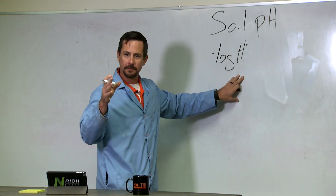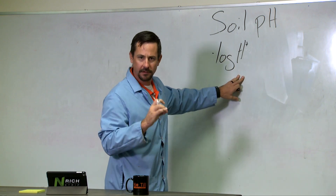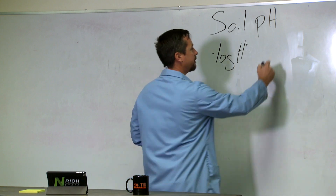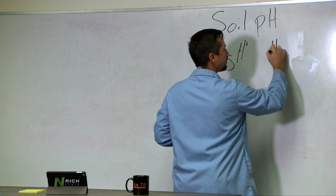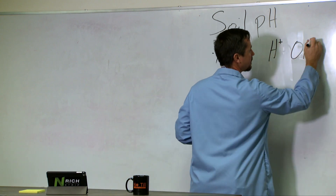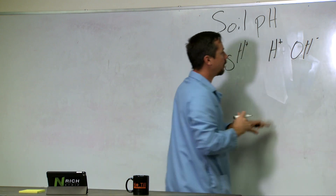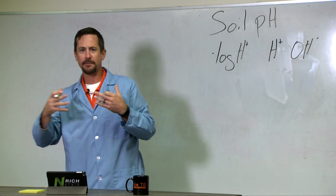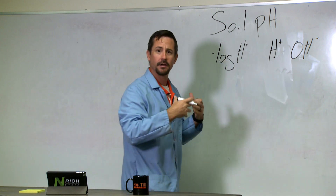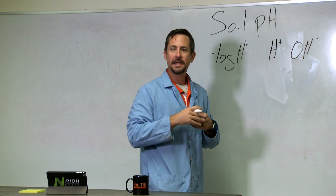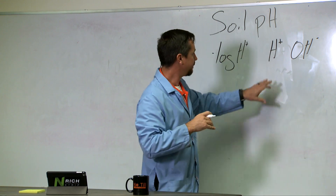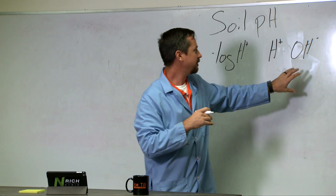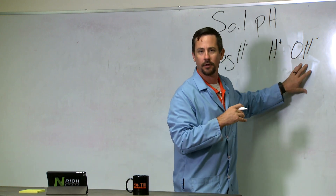The soil system is balanced between two different elements when it comes to hydrogen. You have hydrogen and you have hydroxides — OHs. In a happy soil, they're at equal concentrations. So at a pH of 7, you effectively have about the same amount of hydrogen as you have hydroxides.